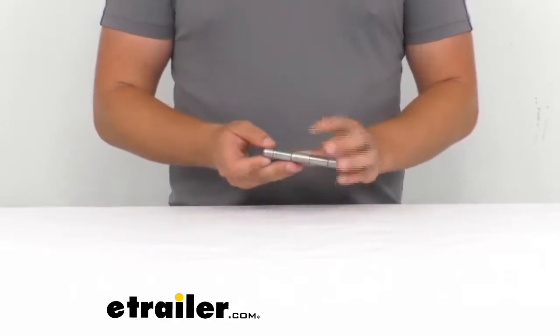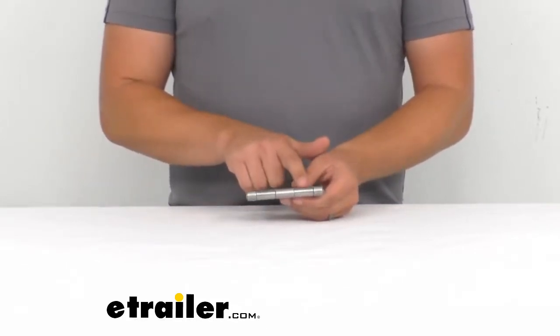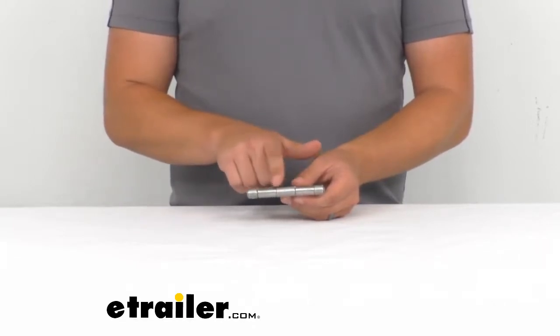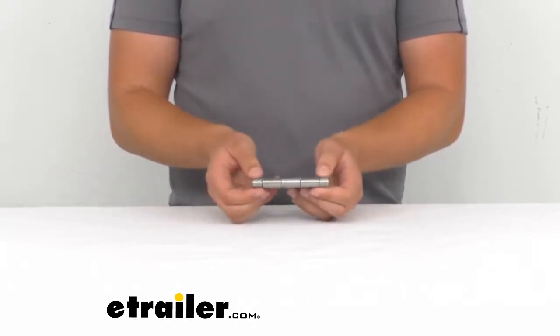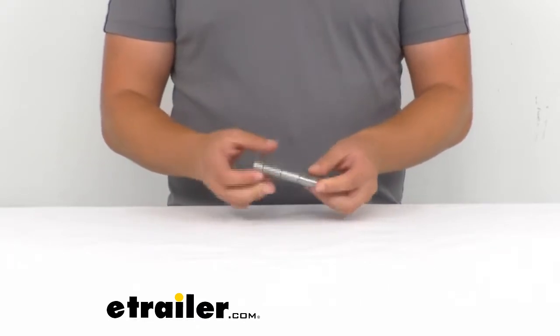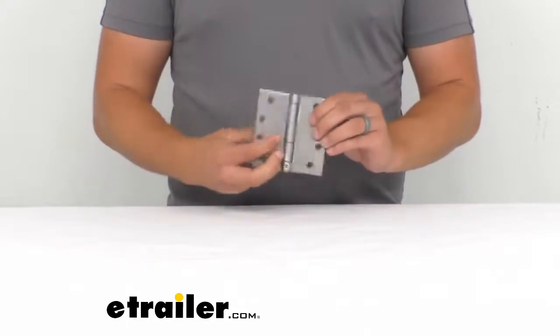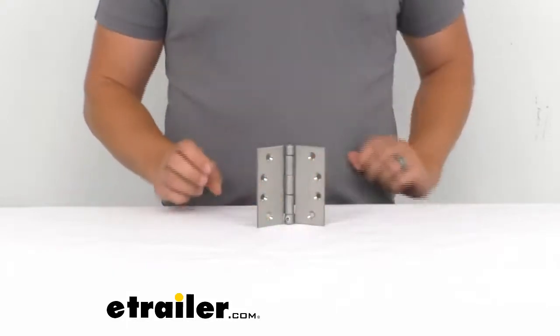Each knuckle here on the pin is going to be an inch wide. You've got three of those there and then a half inch wide on these knuckle ends. That'll do it for a look at this stainless steel butt hinge.